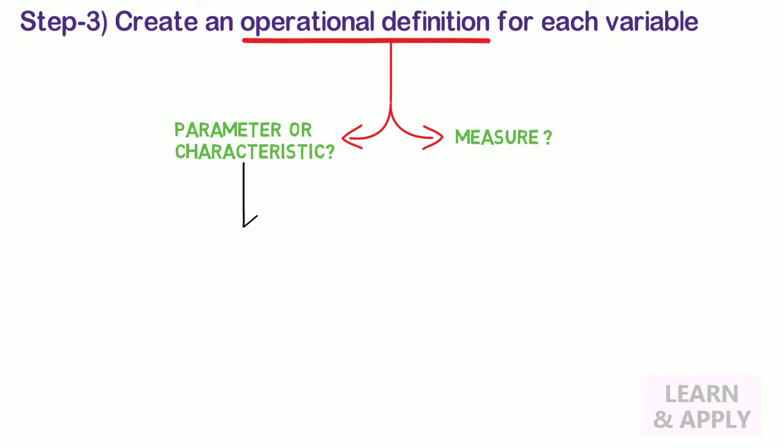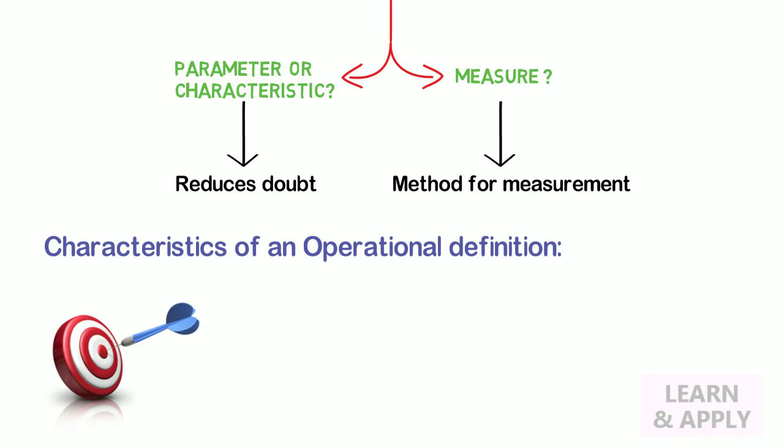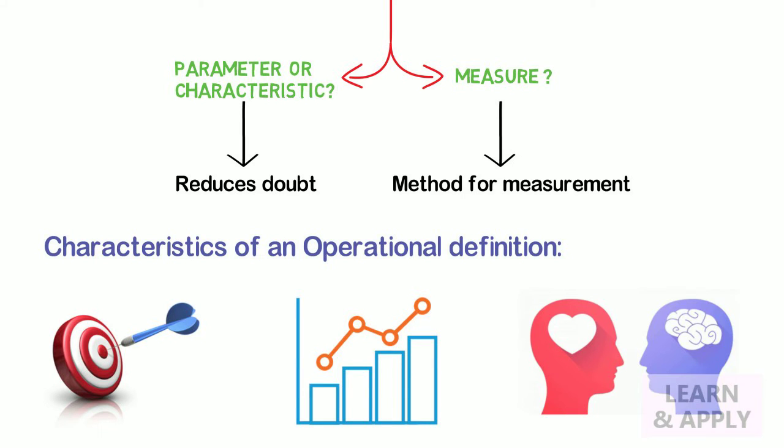An operational definition reduces doubt, providing persons involved with the same understanding of the characteristic or parameter. It also describes the method for measuring the parameter or characteristic. Characteristics of an operational definition: An operational definition is specific and concrete, measurable, and sensible to us as well as our customer.